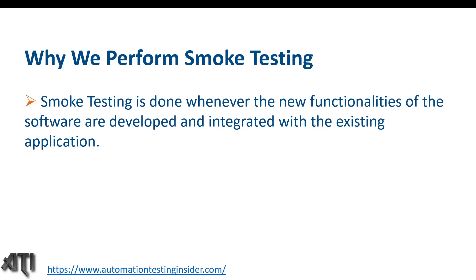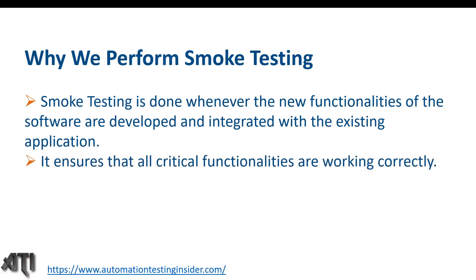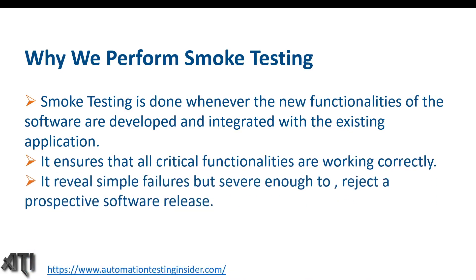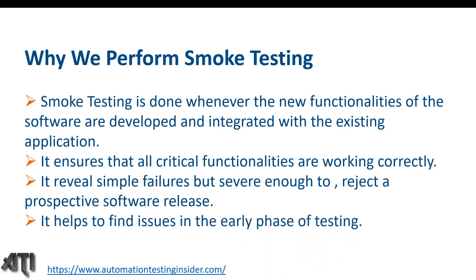Why do we perform smoke testing? Smoke testing is done whenever new functionalities of the software are developed and integrated with the existing application — for example, when 25 percent of features have been implemented and the build is unstable. It ensures that all critical functionalities are working correctly. It reveals simple failures that are severe enough to reject a prospective software release and helps find issues in the early phase of testing.